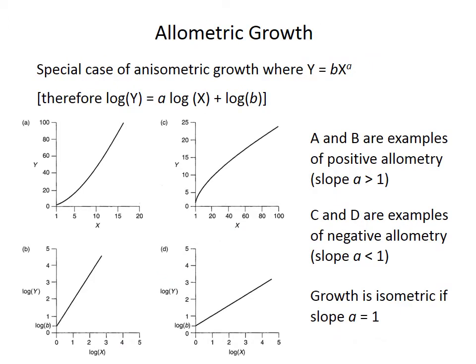There's a special case of anisometric growth where measured features, when plotted against one another, are related by a power law relationship. When plotted with logarithmic scales, it appears linear in log space with a slope of a, where a is the exponent. Exponents greater than 1 indicate positive allometry, where the y-axis variable grows increasingly quickly relative to the x-axis variable, as in examples A and B. In C and D, exponents less than 1 represent the opposite — negative allometry — where the y-axis variable increases more slowly as the x-axis variable increases.